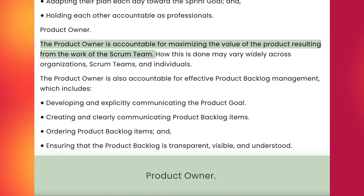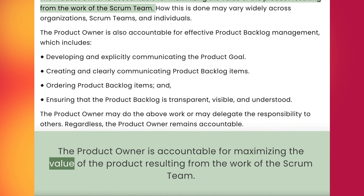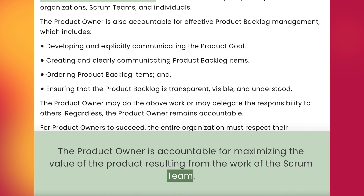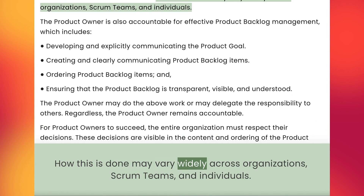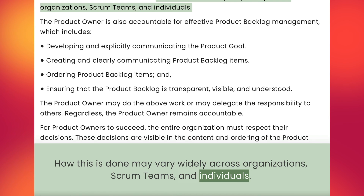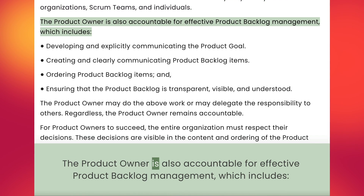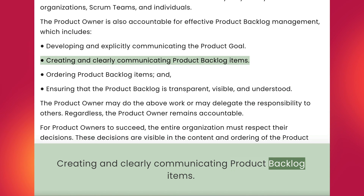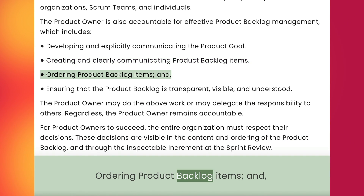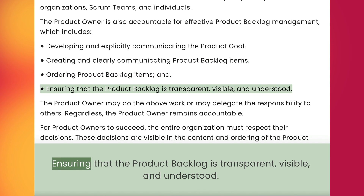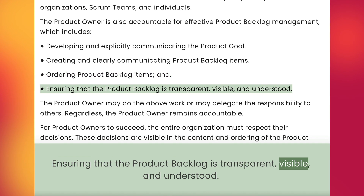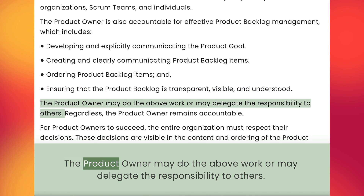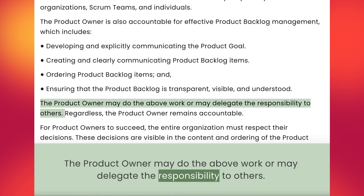Product Owner. The product owner is accountable for maximizing the value of the product resulting from the work of the Scrum team. How this is done may vary widely across organizations, Scrum teams, and individuals. The product owner is also accountable for effective product backlog management, which includes: developing and explicitly communicating the product goal; creating and clearly communicating product backlog items; ordering product backlog items; and ensuring that the product backlog is transparent, visible, and understood. The product owner may do the above work or may delegate the responsibility to others.